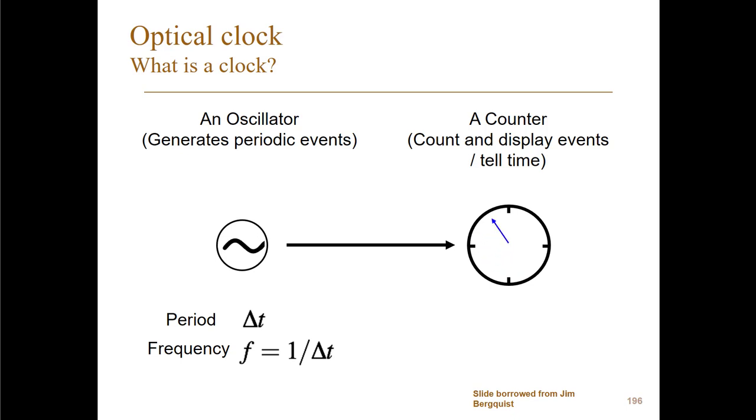Since we can measure this so accurately, and there are some optical transitions which are very well defined, a number of years ago they came up with the idea of using this to define the second eventually. The second is still defined by a transition, but it's an RF transition at 9.2 gigahertz.